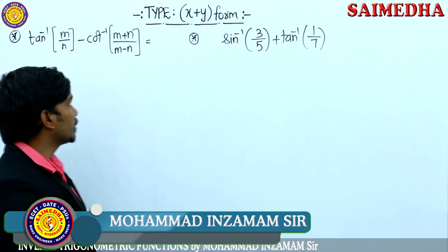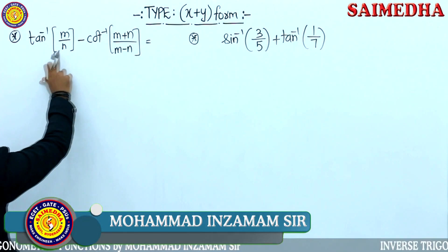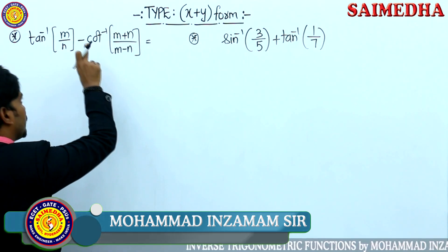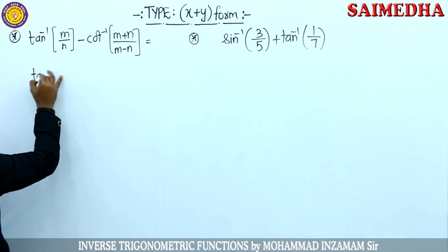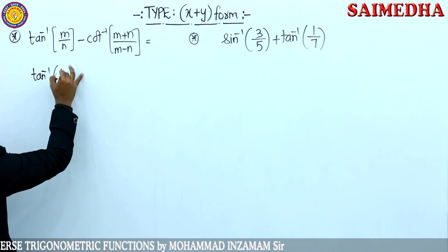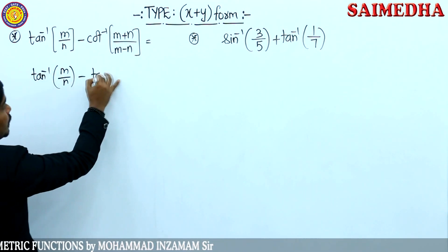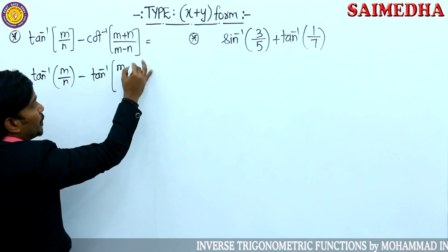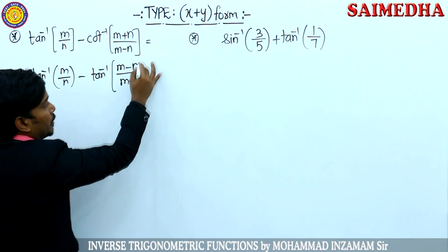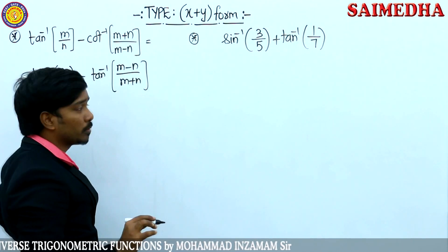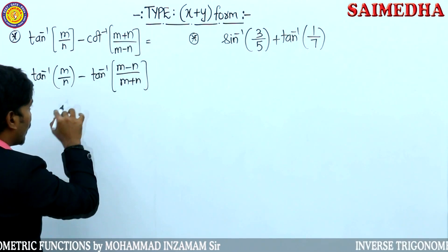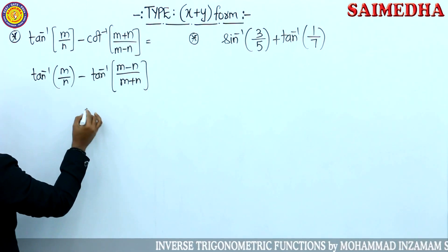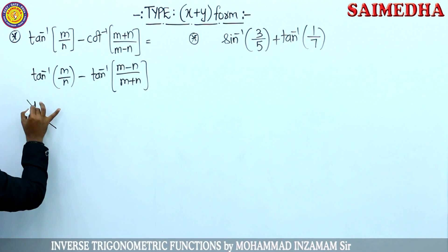Observe the next question: it is an over-the-board question given tan inverse of something minus cot inverse of something. Can you write this in the generalized form: tan inverse of x minus tan inverse of y? Cot inverse converts in tan inverse as 1/x form. The formula we have derived: tan inverse of x minus tan inverse of y — this logic we already discussed.